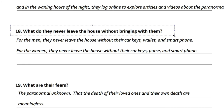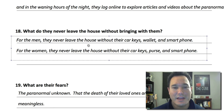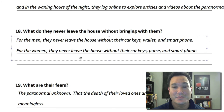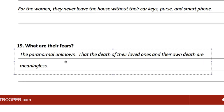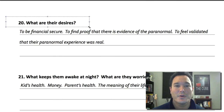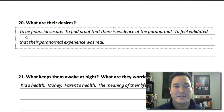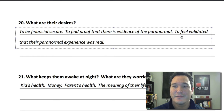Number eighteen: what do they never leave the house without? For men — car keys, wallet, and smartphone. For women — car keys, purse, and smartphone. Number nineteen: what are their fears? The paranormal unknown — that the death of their loved ones and their own death are meaningless. Number twenty: what are their desires? To be financially secure, to find proof of the paranormal, and to feel validated that their paranormal experience was real.